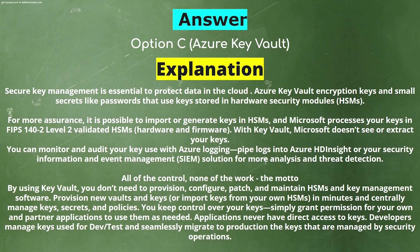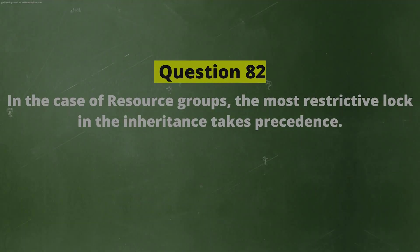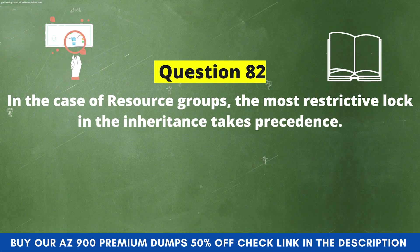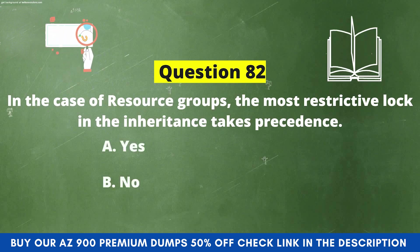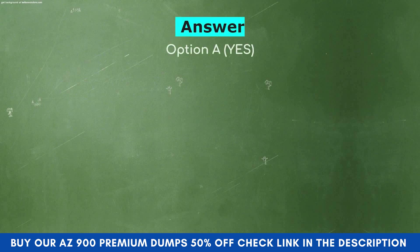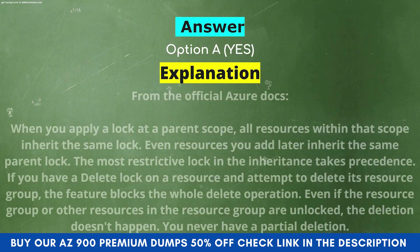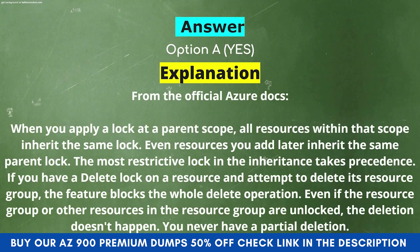Next question: In the case of resource groups, does the most restrictive lock in the inheritance take precedence? Option A: Yes. Option B: No. The correct answer is Option A, Yes. Explanation: When you apply a lock at a parent scope, all resources within that scope inherit the same lock — even resources you add later. The most restrictive lock in the inheritance takes precedence. If you have a delete lock on a resource and attempt to delete its resource group, the feature blocks the whole delete operation, even if the resource group or other resources are unlocked.